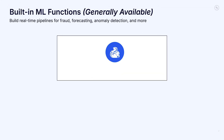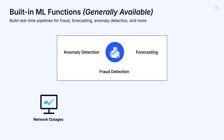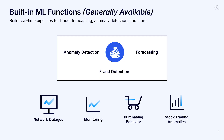Built-in ML functions are the easiest way to get started with AI on your streaming data. You can quickly create AI/ML pipelines directly with Flink for tasks like anomaly detection, forecasting, fraud detection, and more, helping you detect network outages or spot changes in purchasing behavior. Built-in ML functions let you turn streaming data into actionable signals. Once you have those signals, they are often triggers to invoke an agent to take action, like adjusting inventory or responding to customer issues in real time.